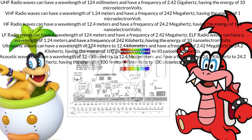At 300 gigahertz, the corresponding wavelength is 1 millimeter, and at 30 hertz it is 10,000 kilometers. Like all other electromagnetic waves, radio waves travel at the speed of light. They are generated by electric charges undergoing acceleration, such as time-varying electric currents. Radio waves are generated artificially by transmitters and received by radio receivers using antennas. Radio waves are very widely used in modern technology for fixed and mobile radio communication, broadcasting, radar and other navigation systems, communication satellites, wireless computer networks and many other applications.